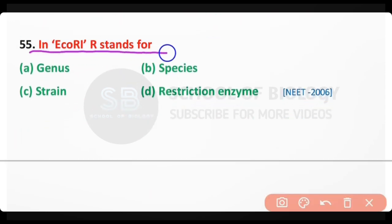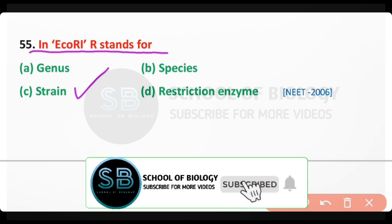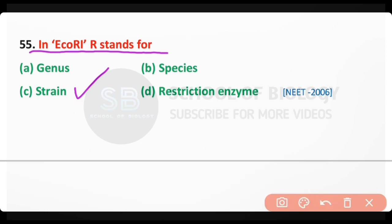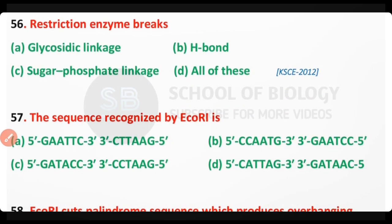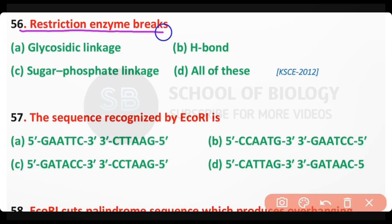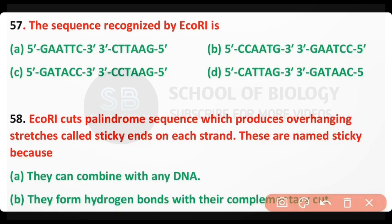Question number 55. In EcoRI, the R stands for: genus, species, strain, or restriction enzyme? The correct answer is option C — in EcoRI, the R stands for the specific strain of the bacteria. Question number 56. Restriction enzymes break the sugar-phosphate linkage in DNA. The correct answer is option C.